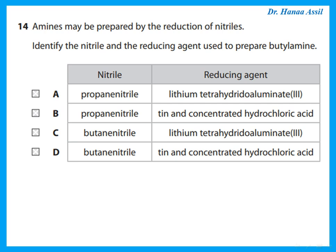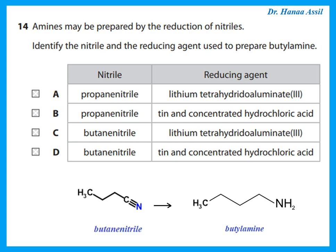Amines may be prepared by the reduction of nitriles. To prepare butylamine, the nitrile needed is butanenitrile. The reducing agent can be lithium aluminium hydride (lithium tetrahydridoaluminate) or hydrogen in the presence of a nickel catalyst. Either will convert the nitrile into an amine.